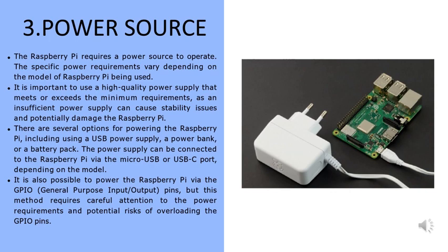The power supply can be connected to the Raspberry Pi via the micro USB or USB-C port, depending on the model. It is also possible to power the Raspberry Pi via the GPIO (General Purpose Input/Output) pins, but this method requires careful attention to the power requirements and the potential risk of overloading the GPIO pins.